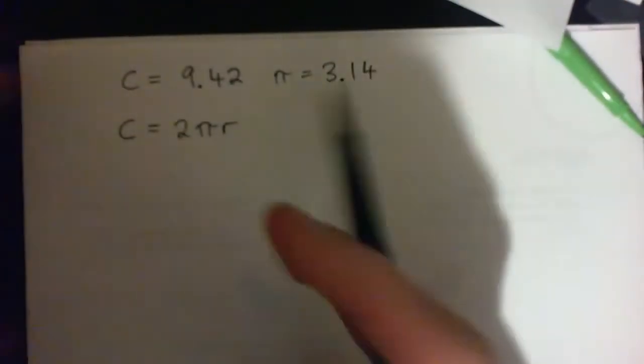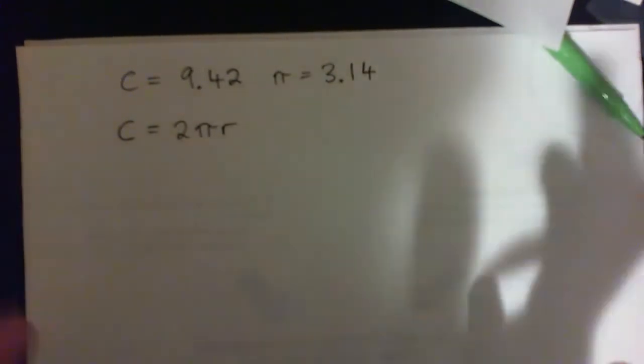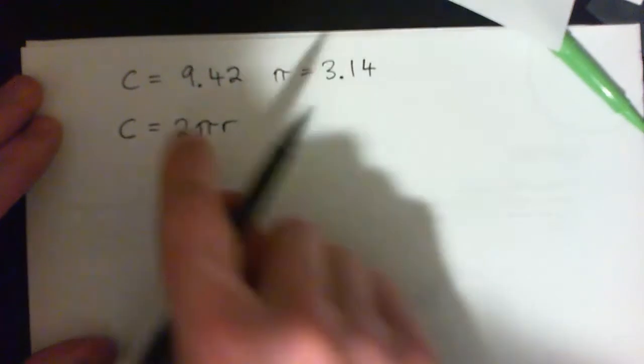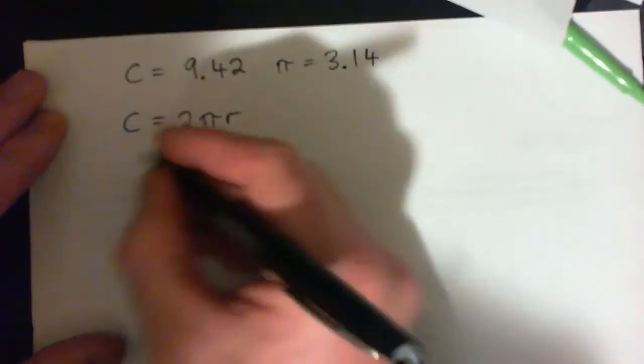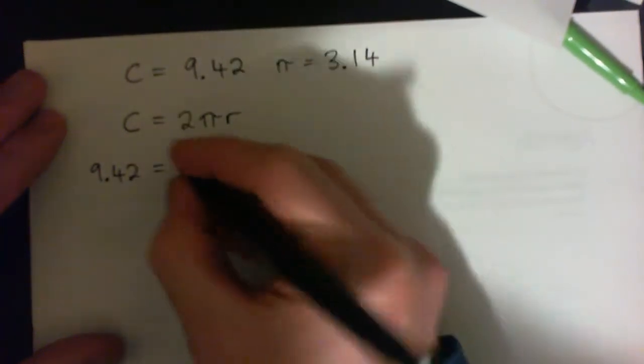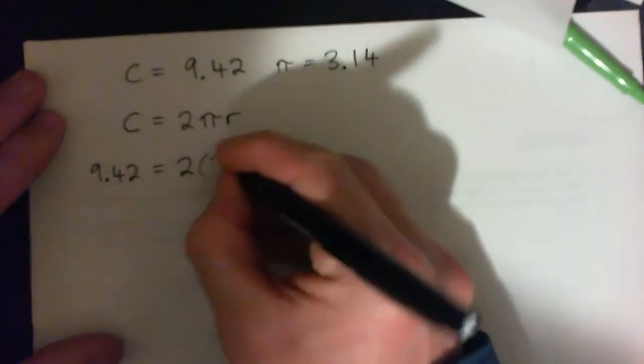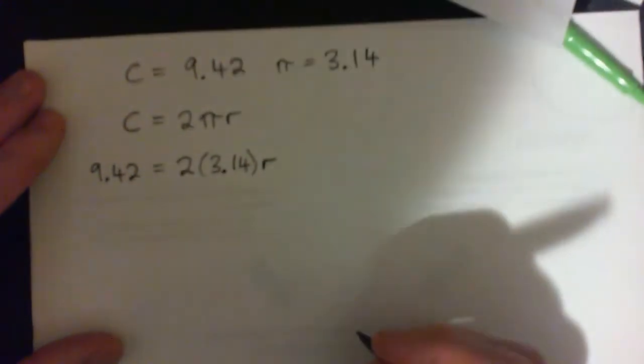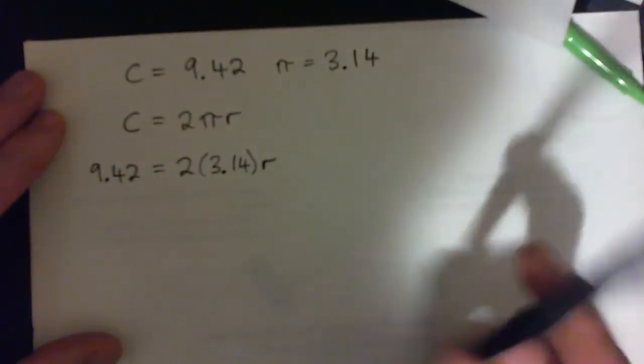So the circumference of any circle is 2π times whatever the radius is, right? And if we're given the circumference, given pi, so we can plug 9.42 into the circumference. And that's equal to 2 times 3.14 times r. And now we have to solve for r.